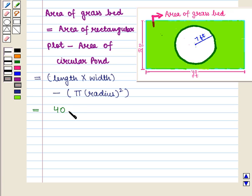So this is equal to length times width, i.e., 40 times 20, minus pi which is 22/7 times radius squared. The radius is given as 7, so we have 7 times 7.